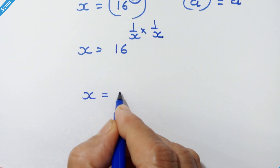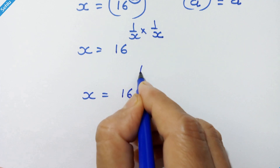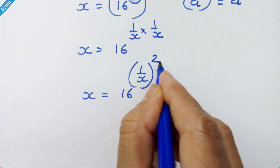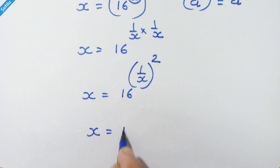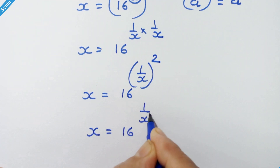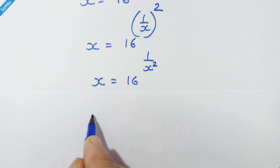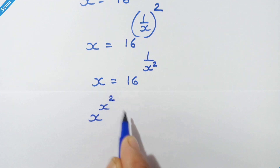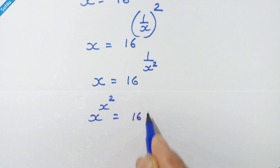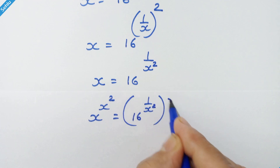Now we can write x is equal to 16 raised to 1 upon x squared. So we have x is equal to 16 raised to 1 upon x square. Now we will raise x square as an exponent on both sides. So we have x raised to x square is equal to 16 raised to 1 upon x square, whole raised to x square.